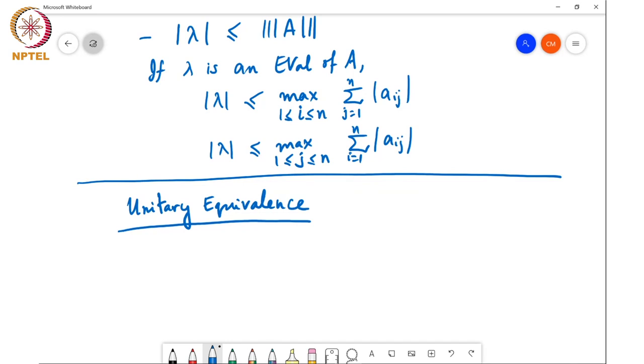if Y1, Y2 up to YK are orthogonal vectors and they're nonzero, then if I define Xi to be Yi divided by square root of Yi Hermitian Yi, then these X1, X2 up to XK will form an orthonormal set of vectors. So obviously, orthonormal vectors are nonzero by definition.